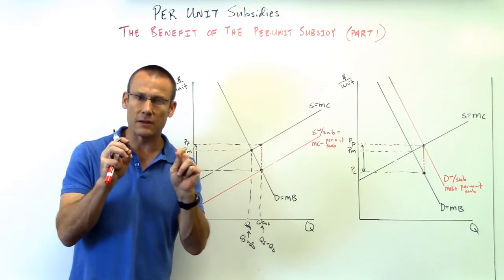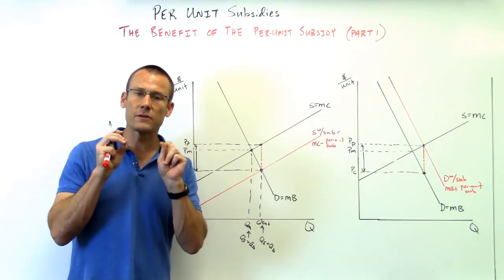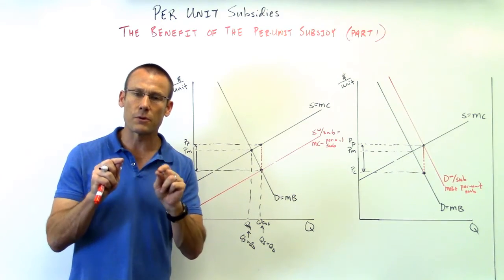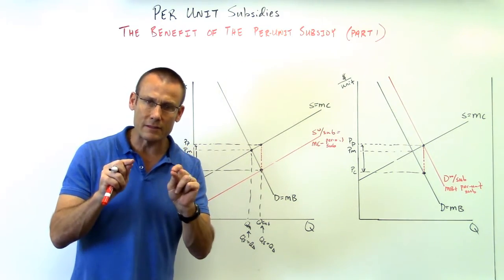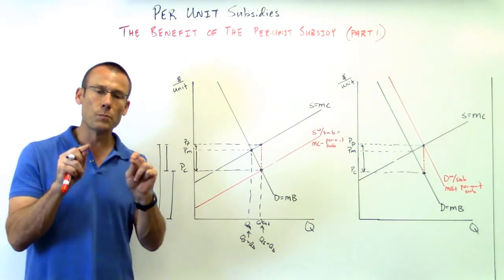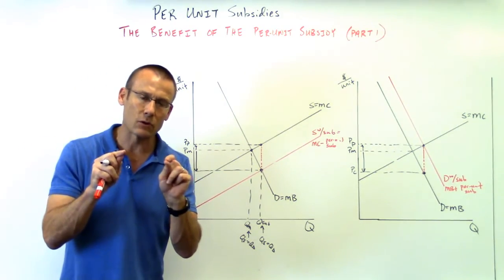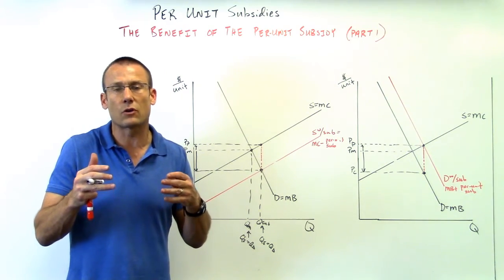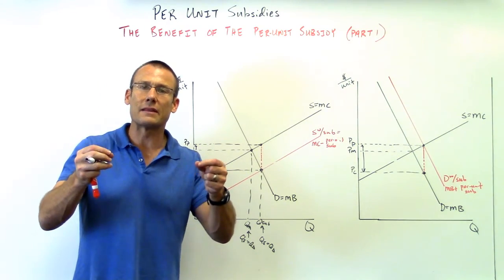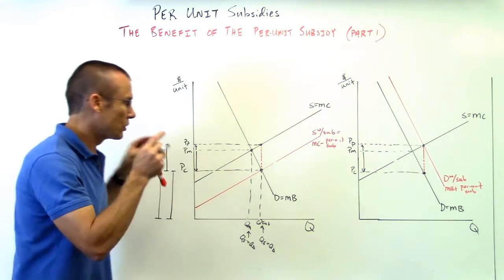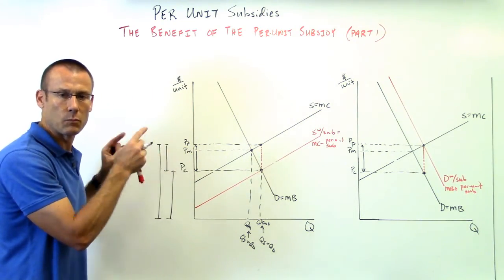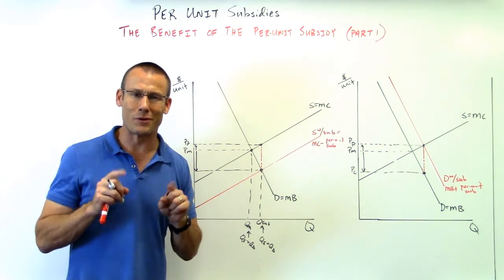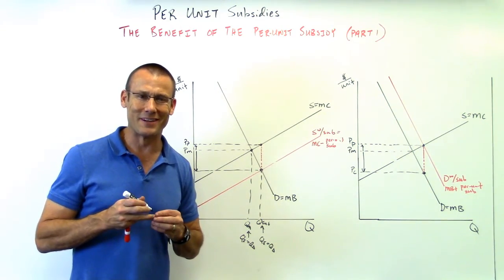It doesn't matter which curve we shift. Shifting the curves is based on who the government is cutting the check to — but that has nothing to do with who gets the benefits of the per unit subsidy. What determines who gets the benefits is the relative elasticities of the curves. The group that is more inelastic — who needs a bigger price change to get an equal change in quantity — is the one that gets the bigger benefit. The consumer got the bigger benefit because they were more inelastic. That's the end of part one — stay tuned for part two. Thanks for tuning in!